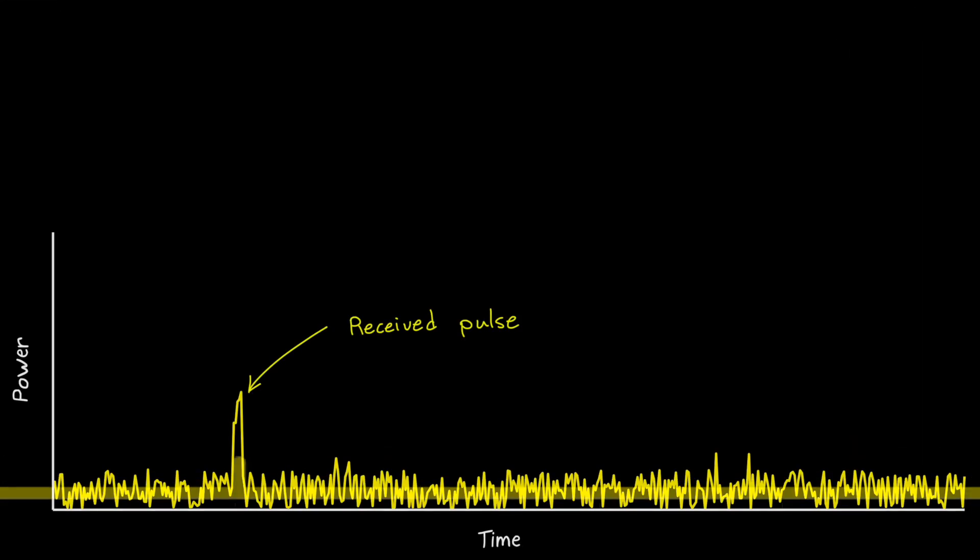If we zoom in on one of these received signals, it might look something like this. After the pulse is sent, the receiver starts listening, and even before the pulse returns, there's going to be some amount of noise power from the electronics and the environment. When the reflected signal does return, hopefully it's much greater than the noise, and we can determine the time between when the pulse was sent and when it returns. The range to the object is calculated by determining the roundtrip distance that light would have traveled in that amount of time.